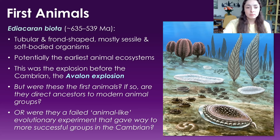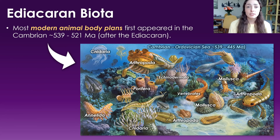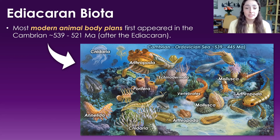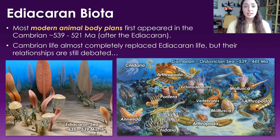Most modern animal body plans — like sponges, cnidaria (corals and jellies), arthropods (trilobites in the Cambrian, lobsters and crustaceans today), echinoderms, crinoids, and mollusks like clams and snails — all first appeared in the Cambrian period after the Ediacaran. We can see in the rock record that Cambrian life almost completely replaced Ediacaran life, but their relationships are still debated. Ediacaran fauna are so enigmatic that they've been classified as animals, lichens, algae, protists, fungi, microbial colonies, or even hypothetical plant-animal intermediates.